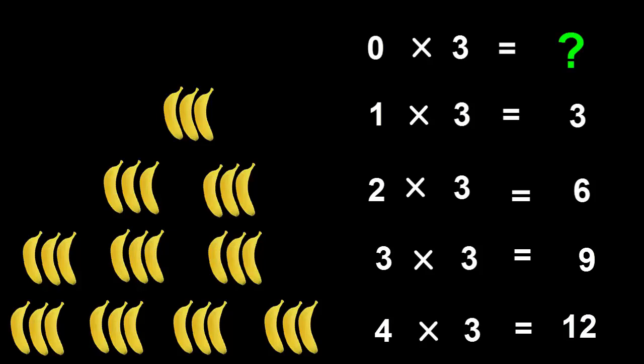Banana-wise, this means zero lots, or no bunches of bananas. So it doesn't matter how many bananas there are in each bunch. If we don't have even a bunch, then we can't have any bananas at all. Zero multiplied by three equals zero. And that goes for multiplying any number by zero. Zero multiplied by a million is zero.